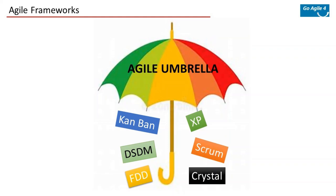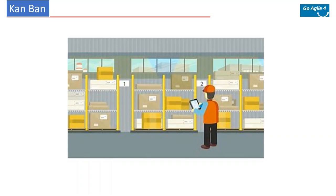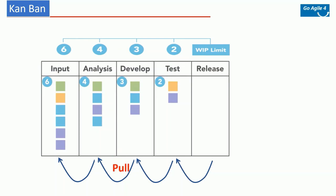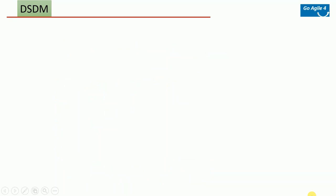Kanban is a Japanese term meaning a signboard. It was originally introduced at Toyota as a visual display for just-in-time manufacturing, as a scheduling system. Coming to IT projects, it's basically a pull system where you have all the tickets and you pull tickets one by one based on your capacity and fix issues. We will try to do a separate session on Kanban.